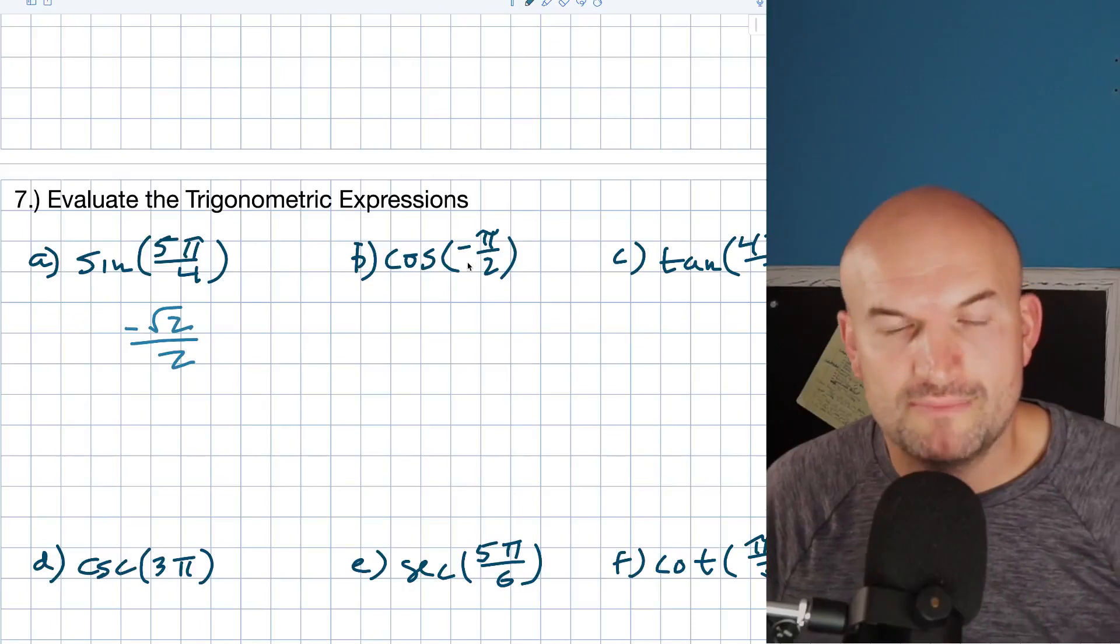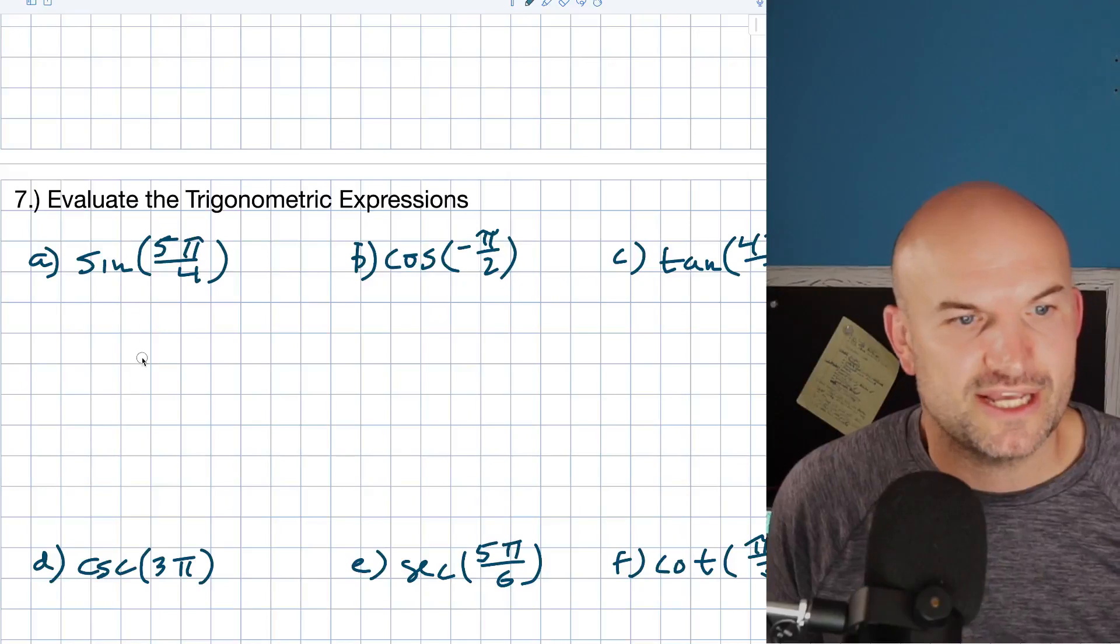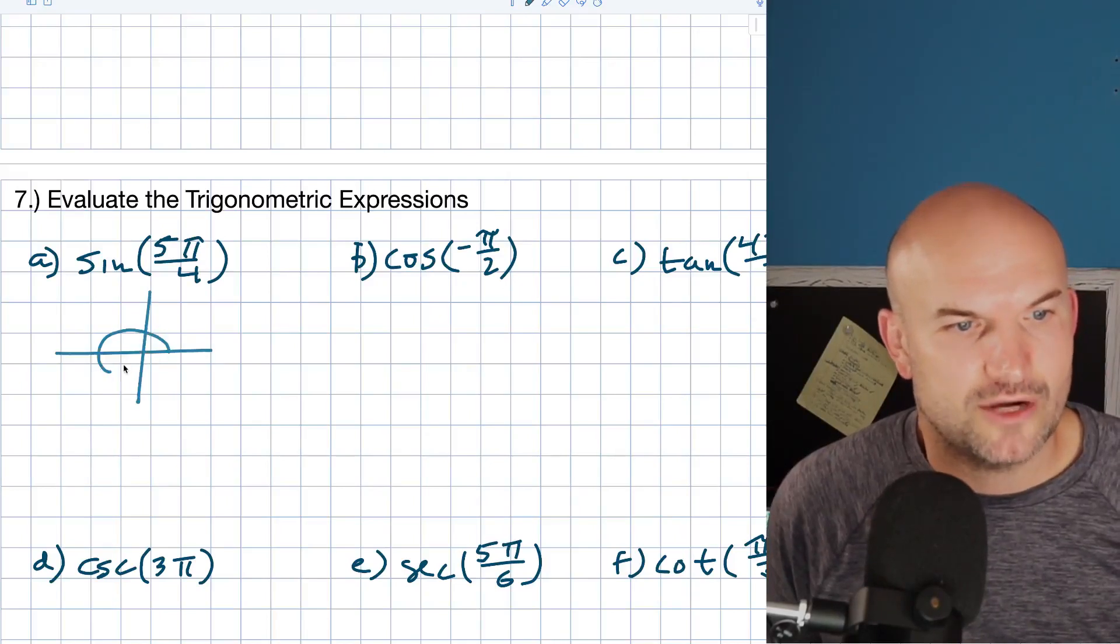Cosine negative π over π halves. Actually, you know, let's sketch the angle here. What I'll do is I'll sketch the angle so you can just kind of see how I'm getting it.